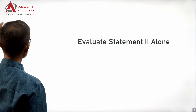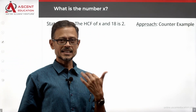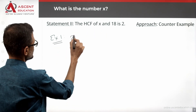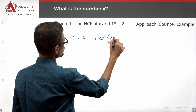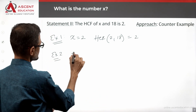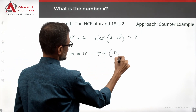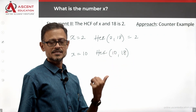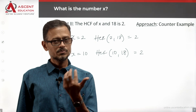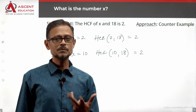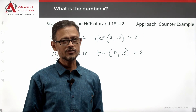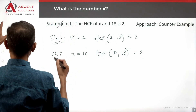Let's take a look at Statement 2 alone and see whether it is sufficient. Statement 2 says: the HCF of x and 18 is 2. Again, using the counter-example approach: if x equals 2, then HCF of 2 and 18 is 2. If x equals 10, then HCF of 10 and 18 is also 2. Is x equal to 2? Possible. Is x equal to 10? Possible. Is x equal to 4? Possible. Is x equal to 14? Possible. There are multiple values for which this is possible, so Statement 2 alone is also not sufficient — eliminate answer option B.